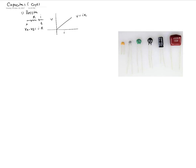Resistors are bidirectional elements. Even if you switch the direction of the voltage applied — you could have voltage applied like this, or you could have voltage applied like this — in one case the current goes this way, in the other case the current goes that way, but Ohm's law still applies.